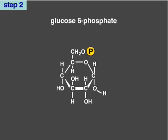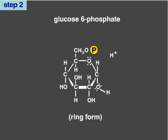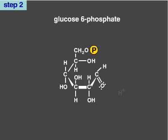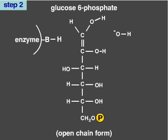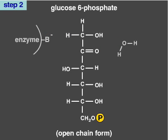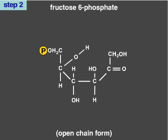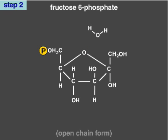In the second step of glycolysis, the enzyme phosphoglucose isomerase catalyzes the opening of the ring form of glucose-6-phosphate to the open-chain form. The same enzyme then performs a reversible reaction in which the carbonyl group of glucose-6-phosphate changes position from the first carbon to the second carbon in the chain. This reaction involves a water molecule, which donates a hydrogen ion to the carbonyl oxygen. The hydrogen ion is then retrieved from the hydroxyl group on the second carbon, creating a new water molecule. In the process, fructose-6-phosphate is formed. The enzyme phosphoglucose isomerase then catalyzes the formation of fructose-6-phosphate into its ring form.